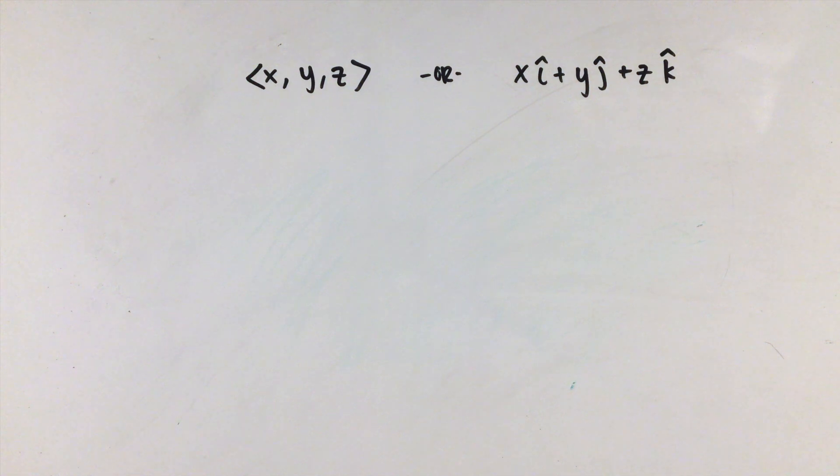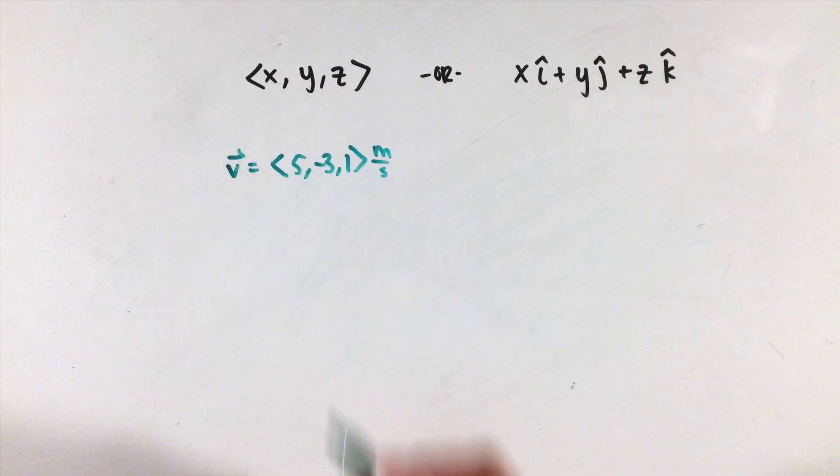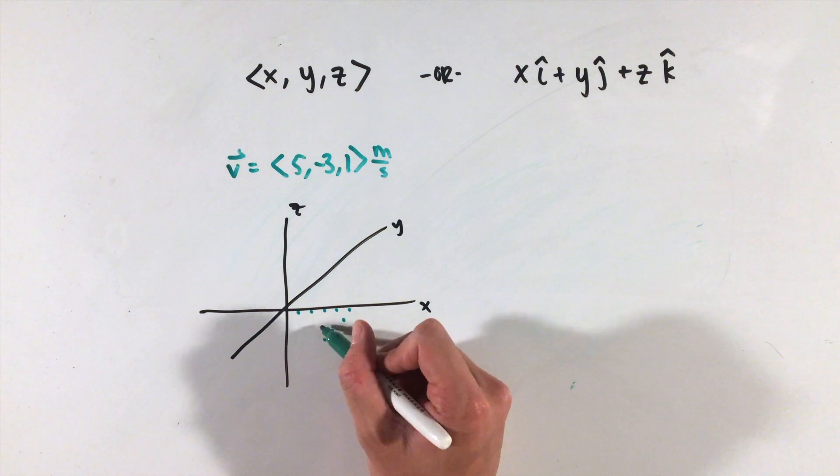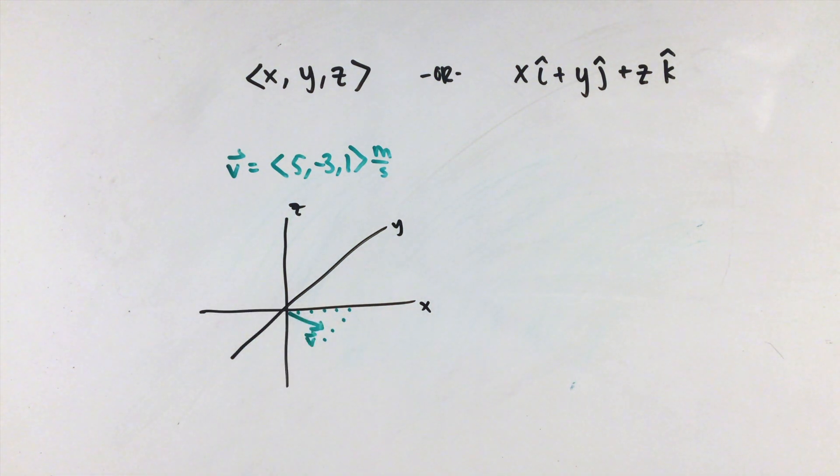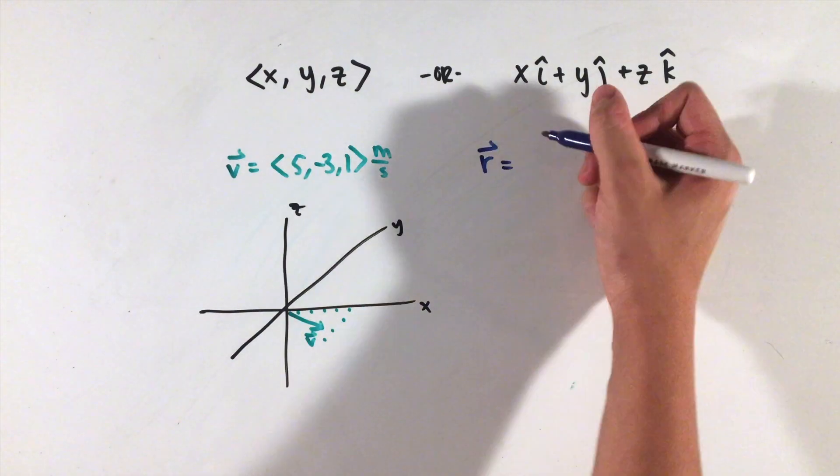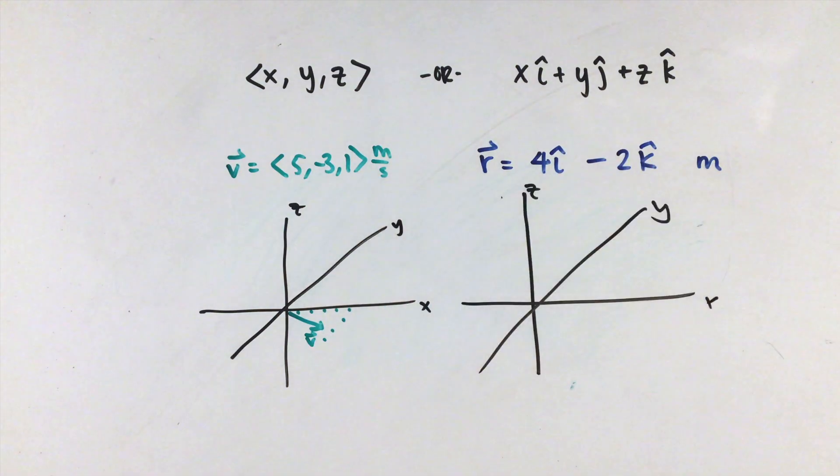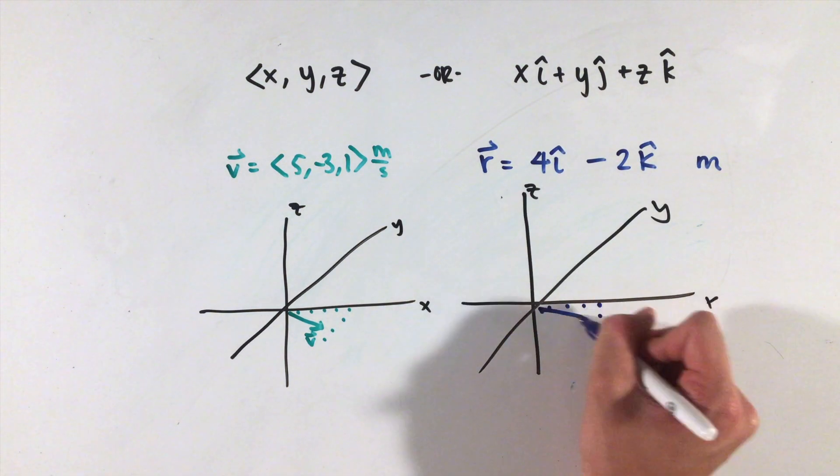For example, this velocity vector here would represent a velocity with x component 5 meters per second, y component negative 3 meters per second, and a z component of 1 meters per second. And this position vector would represent a point in space positive 4 units in the x-direction, 0 units in the y-direction, and negative 2 units in the z-direction.